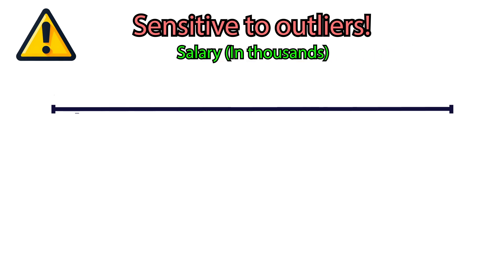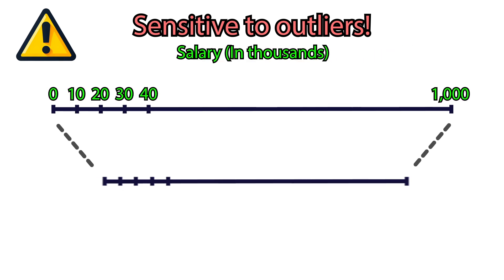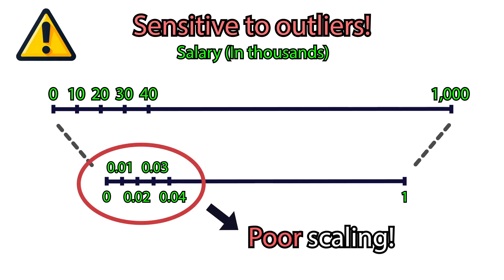However, it is very sensitive to outliers. Let's imagine this data. As we can see, because of one outlier, the whole data is concentrated into a small portion of the range, making it harder for models to distinguish between them effectively.